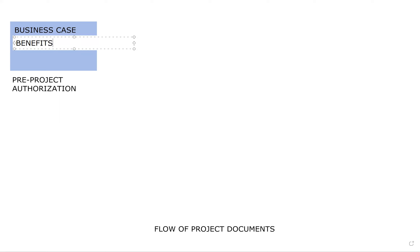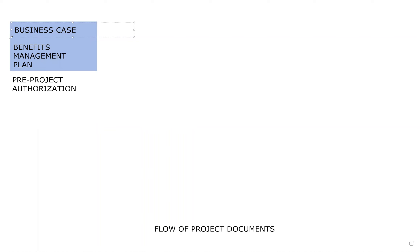The second document in pre-project authorization is called the Benefits Management Plan. The Benefits Management Plan catalogs the benefits that you expect from the project. And throughout the life of the project — and even beyond it — the Benefits Management Plan is updated to reflect the accomplishments of those benefits.